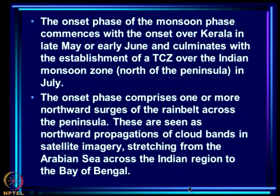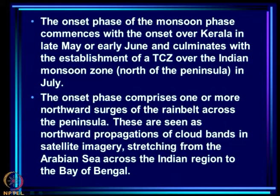The onset phase of the monsoon commences with the onset over Kerala in late May or early June and culminates with the establishment of a TCZ over the Indian monsoon zone north of the peninsula in July. The onset phase comprises one or more northward surges of the rain belt across the peninsula, seen as northward propagations of cloud bands in satellite imagery stretching from the Arabian Sea across the Indian region to the Bay of Bengal.